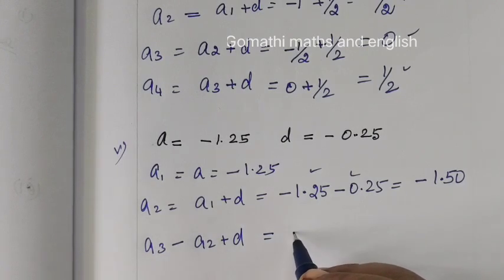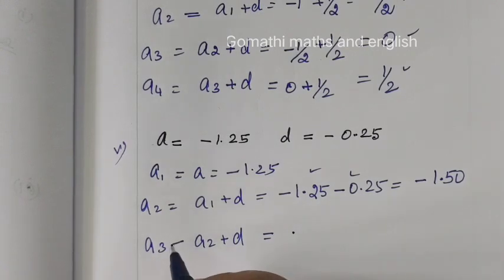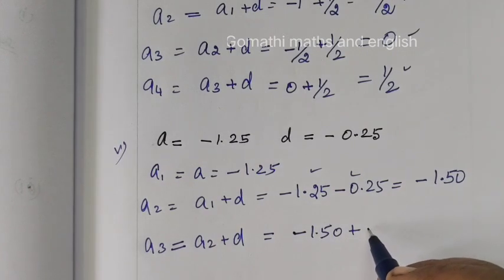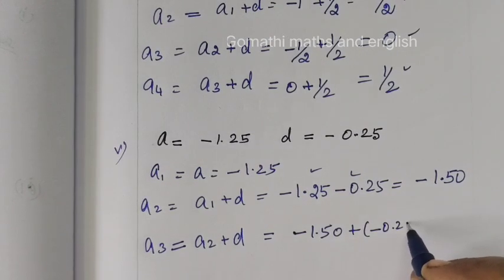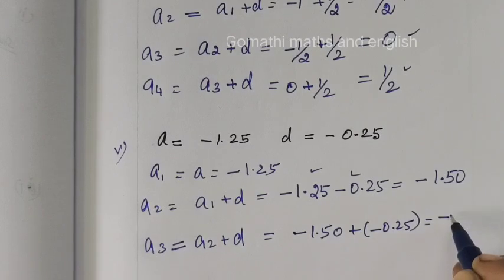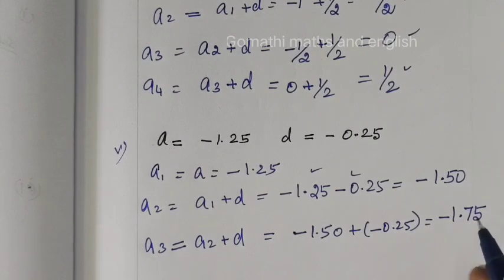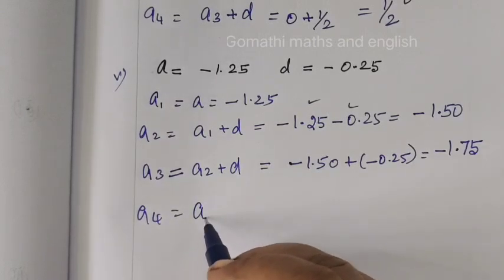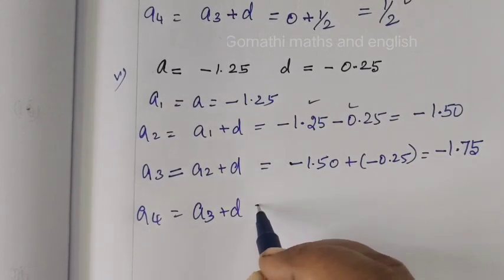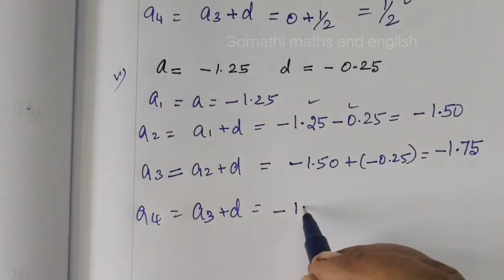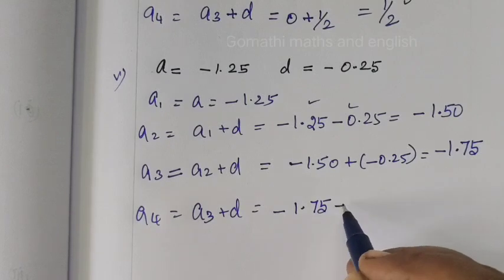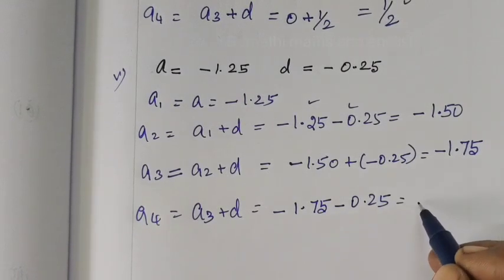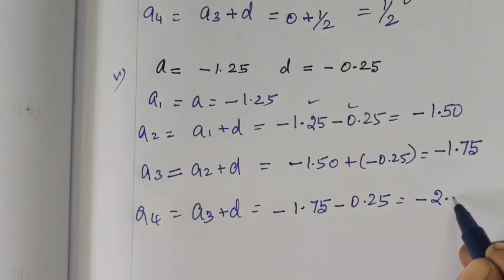a2 is minus 1.50 plus d minus 0.25 gives minus 1.75. Then a4 equal to a3 plus d, minus 1.75 plus minus 0.25 gives minus 2.00.